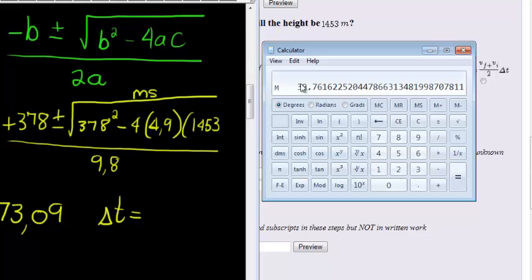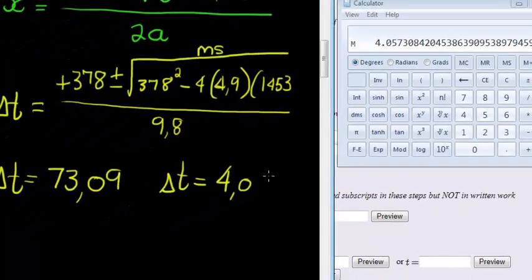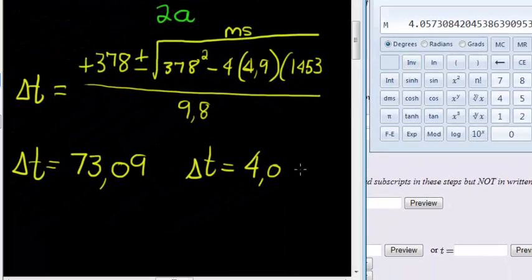Get the answer. This time I subtracted it, so that's why the answer is a bit smaller. So when I divide with 9.8, I get after 4.06 seconds. And these are my two answers.